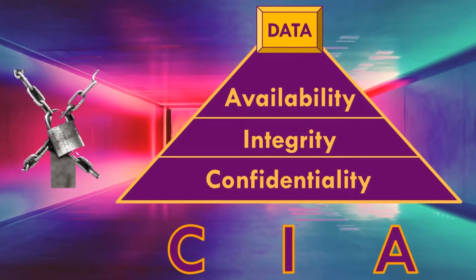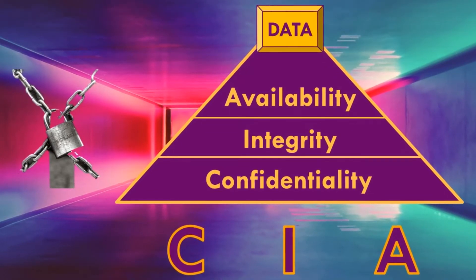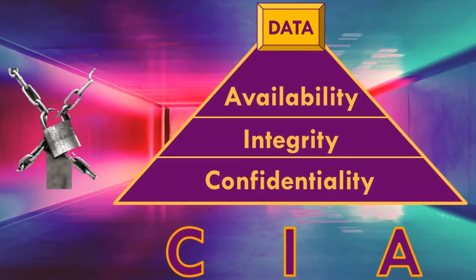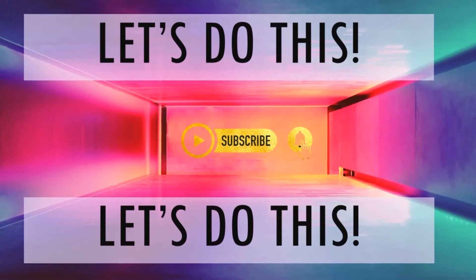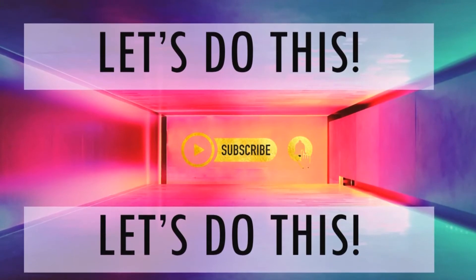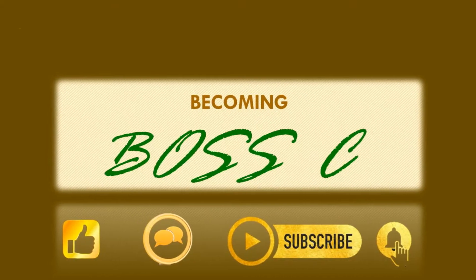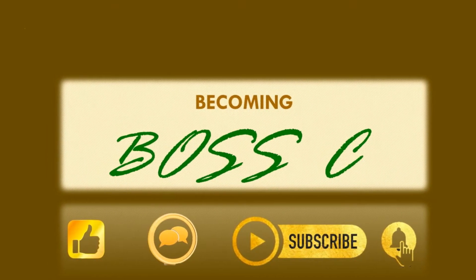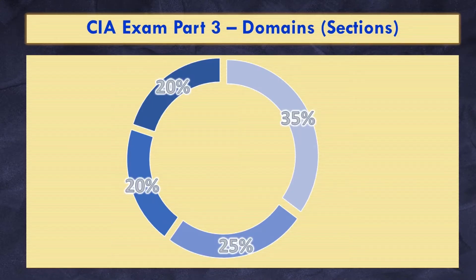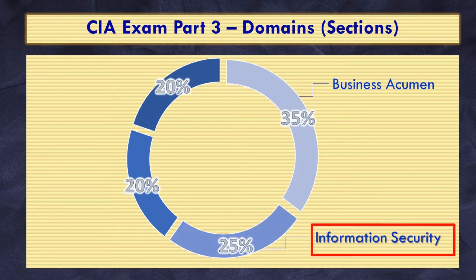All three elements are needed to ensure effective information security is achieved. What good is confidential or accurate and complete information when you cannot access it? Remember, CIA Part 3 has four different domains: business acumen, which takes up 35% of the exam; information security, which makes up 25% of the exam and which is our key focus for today; information technology, which consists of 20% of the exam.